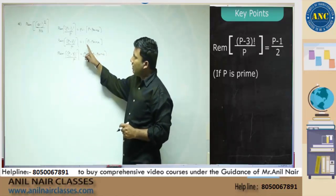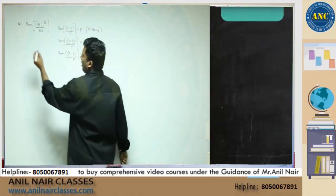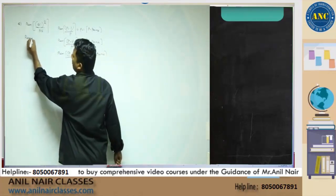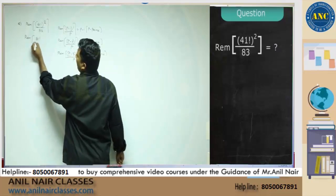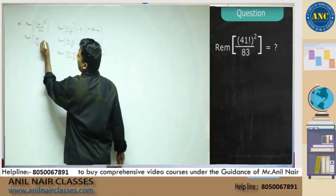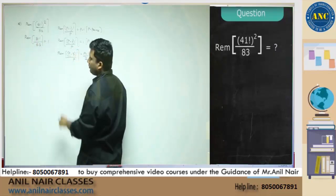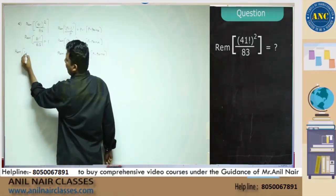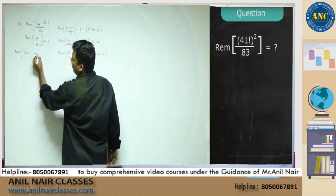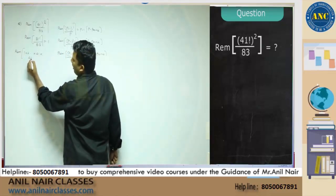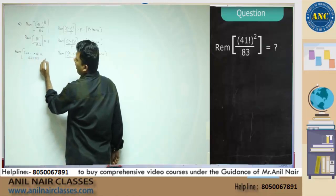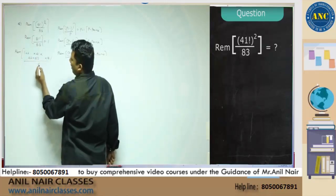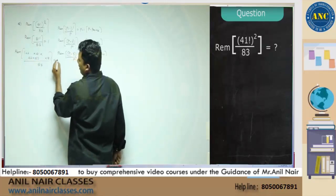Now, what I do is, because 83 is a prime number, I take the second one. First one, 81 factorial divided by 83 is 1. Second problem: 81 factorial can be written as 1 into 2 till 41 into 42, 43 till 81 divided by 83. It is 1.